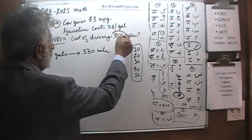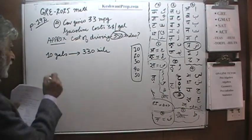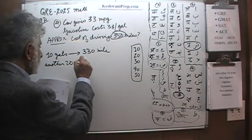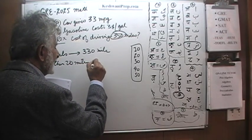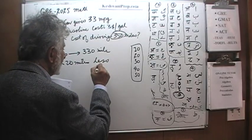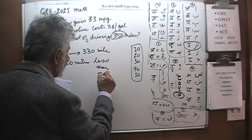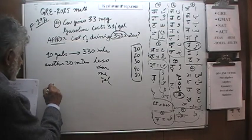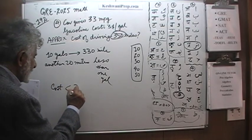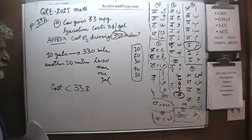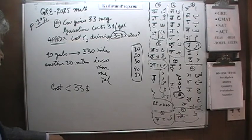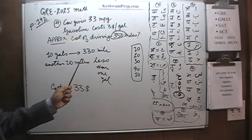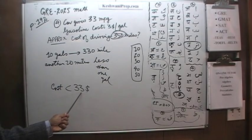We need to go 350 miles. Other 20 miles will take less than one gallon. The total cost of driving should be less than $33. $30, 10 gallons, $30 will take us 330 miles. Another gallon will be more than sufficient to go another 20 miles.